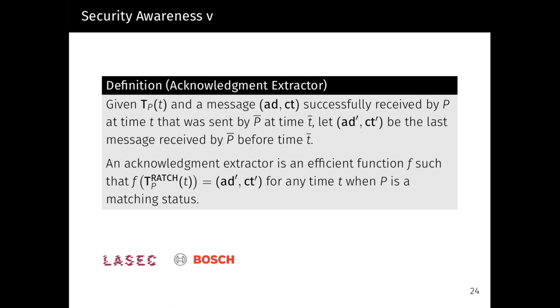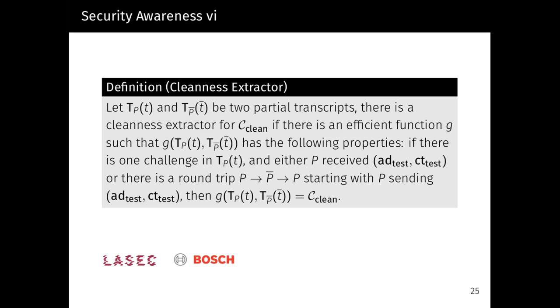Furthermore, we can also define a cleanness extractor. Let T_P and T_P-bar be two partial transcripts. There is a cleanness extractor for C_clean if there is an efficient function G such that G, given those two transcripts, has the following properties: There is one challenge in T_P and either P received AD_test and CT_test, or there is a round trip P to P-bar to P starting with P sending AD_test and CT_test. Then G, given those two transcripts, tells us whether the cleanness predicate has been violated. The reason that we need such a round trip for an outgoing challenge message is that there is no way to know whether the challenge message has actually been correctly received by P-bar.